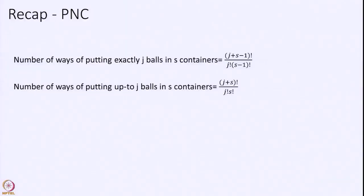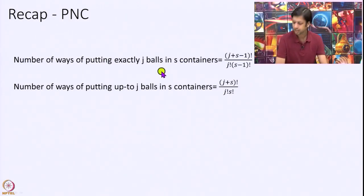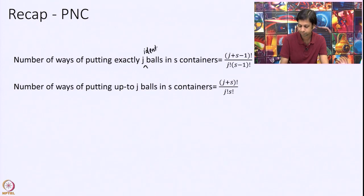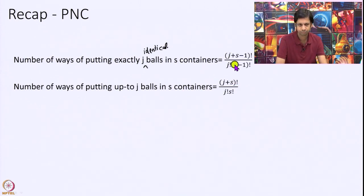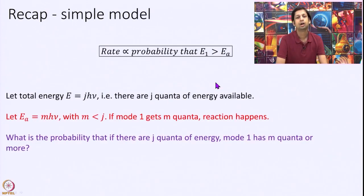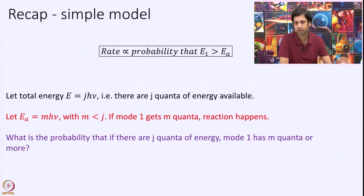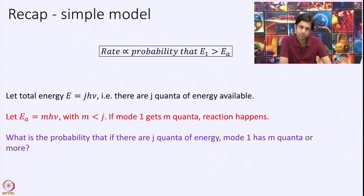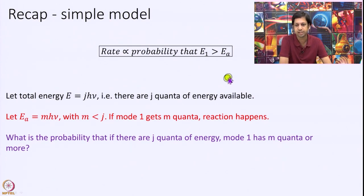A little recap of what we looked at in permutations and combinations: the number of ways of putting exactly j identical balls in s distinct containers is given by a factorial expression, and the number of ways of putting up to j balls in s containers is given by another expression. We also discussed a simple model of calculating rate constant at a given energy, where the rate is assumed to be proportional to the probability that E1, the energy in mode 1, is greater than Ea, the activation energy.